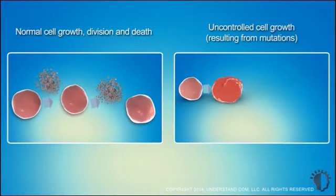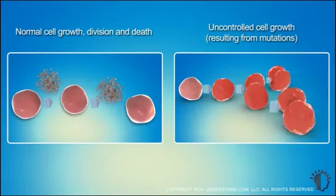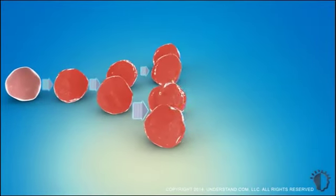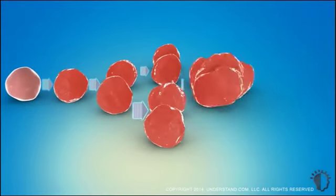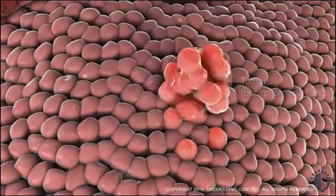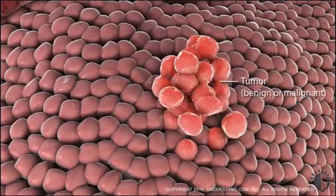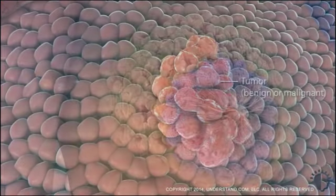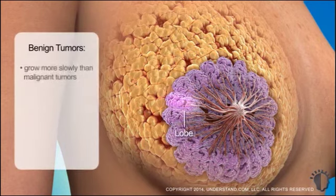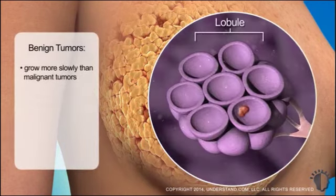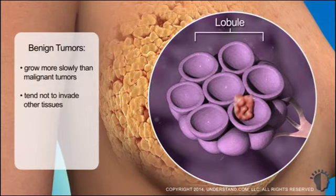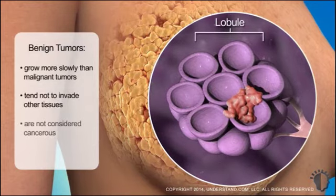Rather than dying off when they should, they keep multiplying. The excessive growth can form masses known as tumors, which can be either benign or malignant. Benign tumors generally grow slower than malignant tumors. They have more normal characteristics and tend not to invade other tissues. Since benign tumors don't spread, they are not considered cancerous.